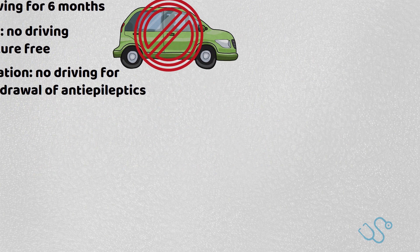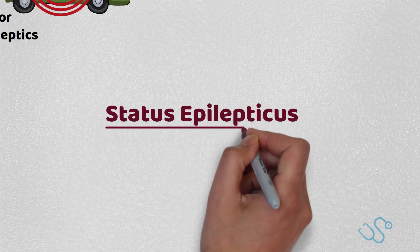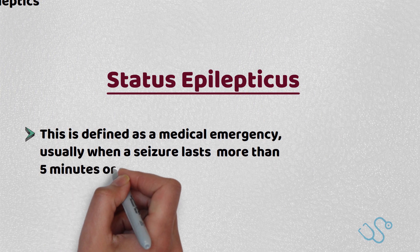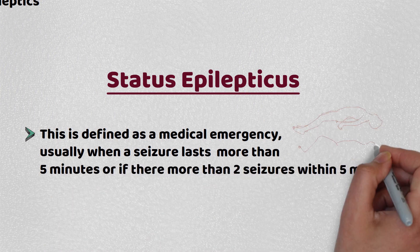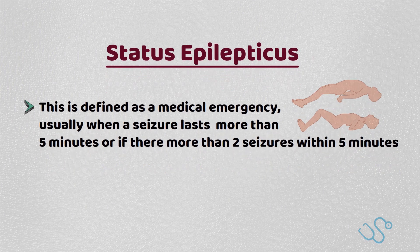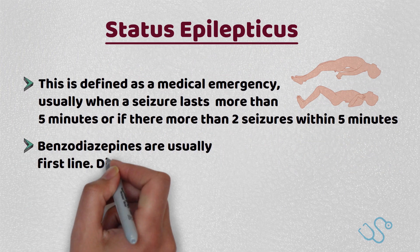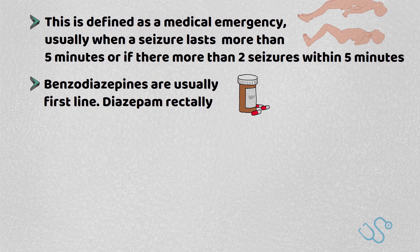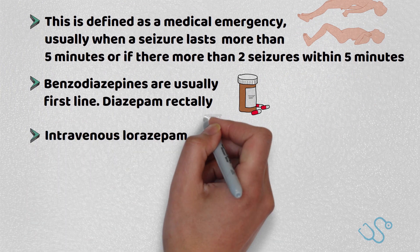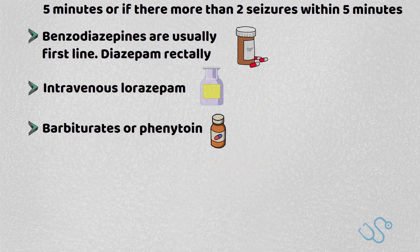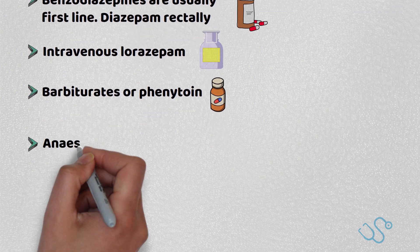We should also cover status epilepticus. This is defined as a medical emergency, usually when a seizure lasts more than 5 minutes or if there are two seizures within 5 minutes. After initial resuscitative measures, benzodiazepines are usually first line. Diazepam rectally is often preferred out of hospital, with intravenous lorazepam used in hospital. Second-line agents like barbiturates or phenytoin are often used, but if those fail, the patient needs to be generally anaesthetised.